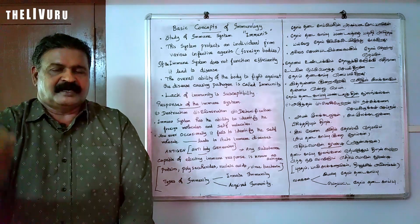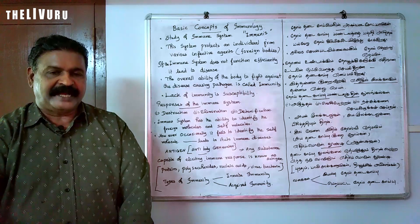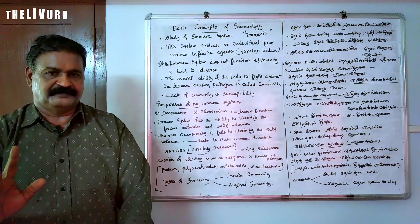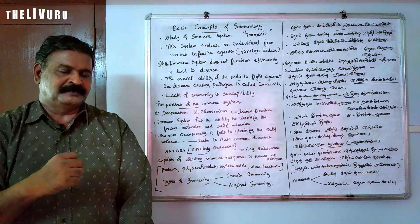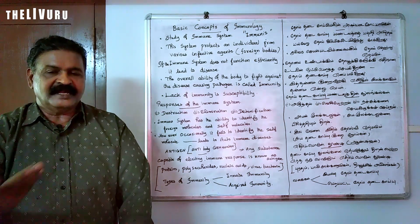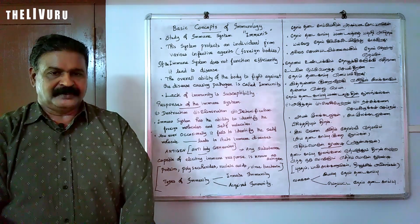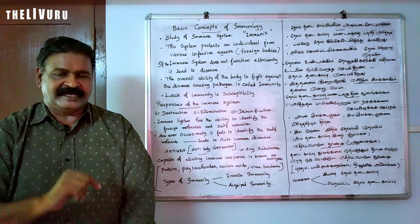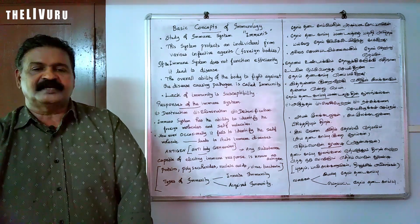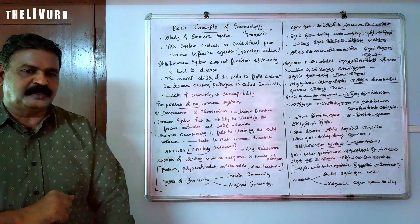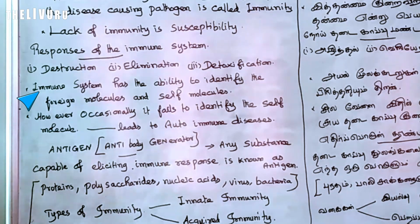Foreign molecules are molecules coming from outside the body — that is, from the environment. The outer layer of these foreign molecules enters the body and the immune system responds to them.